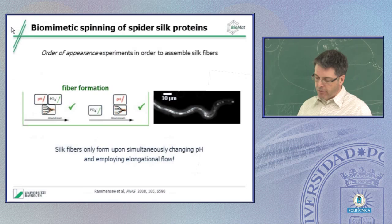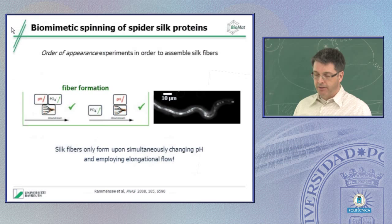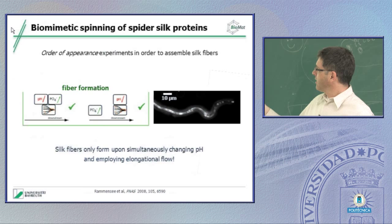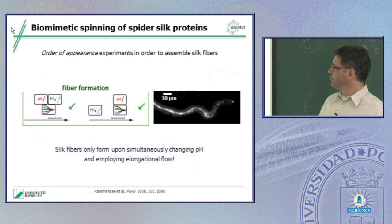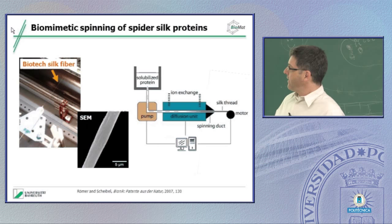We're working further on these microfluidic devices to improve the setups. This is very nice for playing around in the laboratory and getting ideas about how the fibers form. But for large-scale fiber production, this is not useful. This is good for understanding all the molecular processes, but not for making fibers. For making fibers, we actually thought about a biomimetic approach, where we wanted to transfer all the knowledge that we got from the microfluidics to a bigger setup.